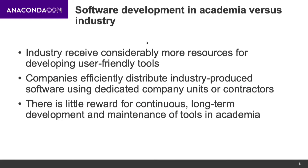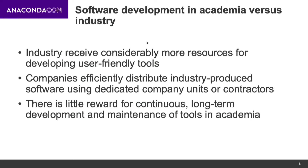Comparing academia versus industry is a whole different story. In academia, there is a lack of resources — if you don't have the funding to hire software developers or train researchers in software techniques, you won't be able to develop user-friendly software. As a result, there is a lack of continuous support for software development.